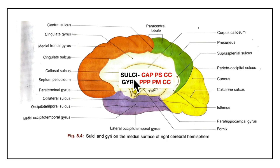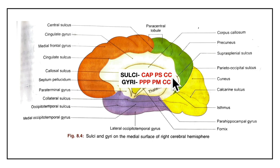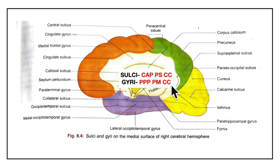A mnemonic for the sulci of the medial surface is CAPPSCC — C for cingulate, A for anterior para-olfactory, P for parieto-occipital, P for posterior para-olfactory, S for suprasplenial, C for calcarine, C for callosal sulcus. For the gyri, use PPPPMCC — P for paraterminal, P for para-olfactory, P for paracentral lobule, P for precuneus, M for medial frontal, C for cingulate gyrus, C for cuneus.